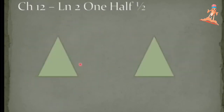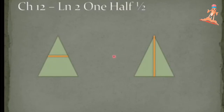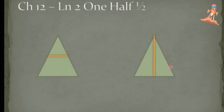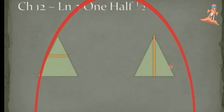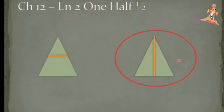Chapter 12, Lesson 2: One Half. We are dividing this triangle like this, and this triangle like this. Now tell me, which triangle has two equal parts? Does this one have two equal parts? No — it has two parts, but they are not equal. This triangle has two equal parts.